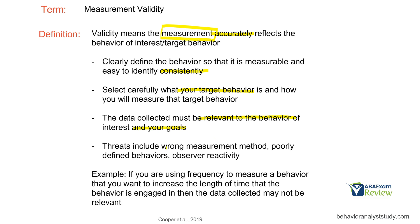What are some threats to validity? Well, choosing the wrong measurement method. If you are using frequency to measure a behavior that you want to change the length of, that's going to be an issue, because that data you are collecting are no longer relevant to your goals. So you've got to pick the right measurement method that's going to help you achieve your goals. Poorly defined behaviors — if your behaviors are defined poorly, it's going to be difficult to measure that target behavior the same way over and over again. And then observer reactivity — one of the hardest parts about being an analyst is supervising your technicians or other professionals and preventing reactivity from affecting data collection. Reactivity plays a big role in how data are collected.